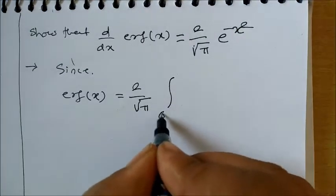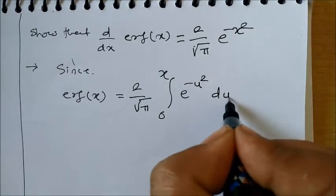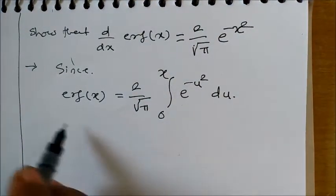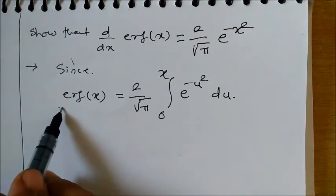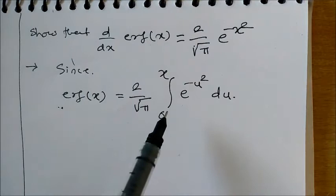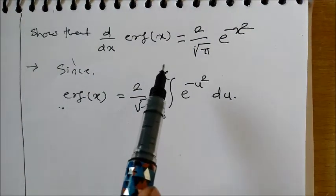Now if I want to differentiate this LHS, which is required here, I need to apply differentiation under the integration sign. Why? Because the limits are not constant but are function of x - the lower limit is constant but the upper limit is function of x, so we'll use Leibniz rule 2.